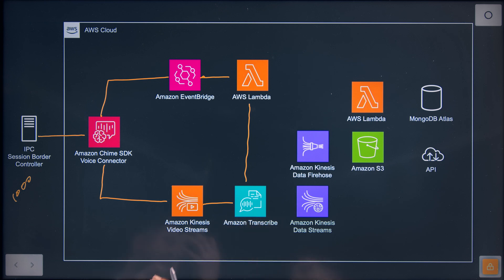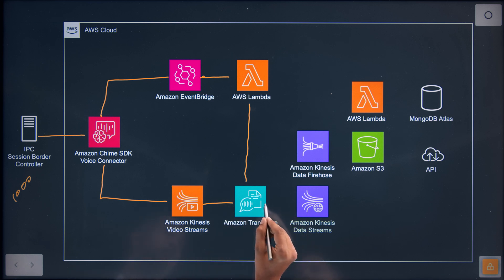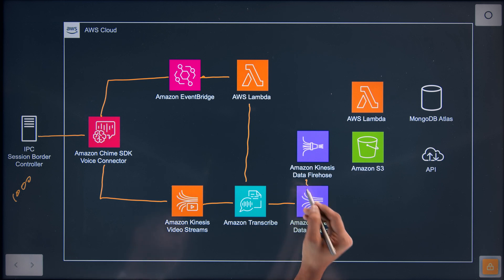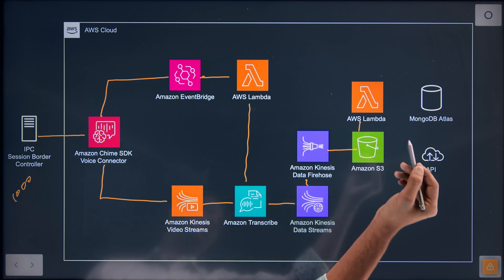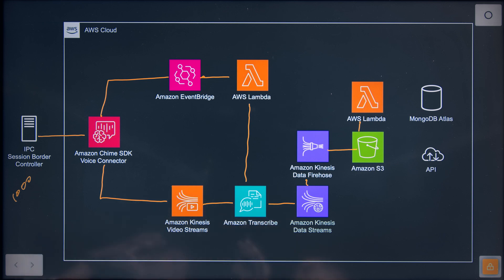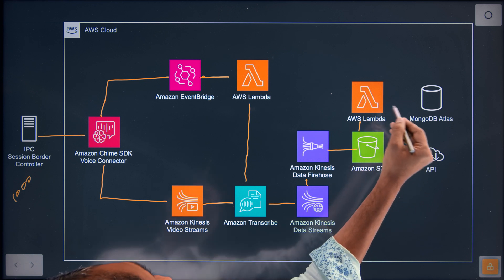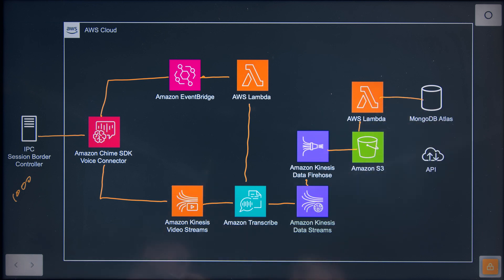What Transcribe does is it generates the text for that five-second chunk which was buffered by Kinesis, and passes the data on to Kinesis Data Streams. From Kinesis Data Streams, we use Amazon Kinesis Firehose to extract that data and push it into S3 as parquet files. As soon as data lands in S3 buckets, we've got an AWS Lambda which enriches this data — it pulls information from various third-party systems and internal IPC systems — and pushes it into our MongoDB Atlas.